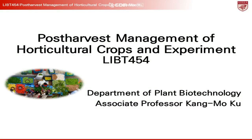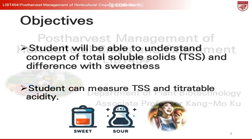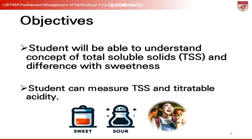Welcome to our deep dive into the fascinating world of post-harvest management, a crucial field that ensures the quality and longevity of our fruits and vegetables. Today, we're focusing on two key indicators that play pivotal roles in assessing produce quality: total soluble solids (TSS) and titratable acidity (TA). Understanding these measures not only helps in maintaining food quality, but also in enhancing the flavors that we all love. Let's unravel the science behind ripeness, sweetness, and that perfect bite.